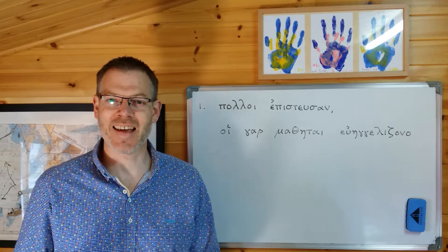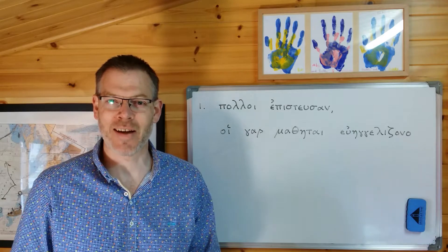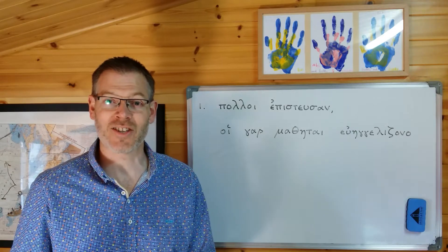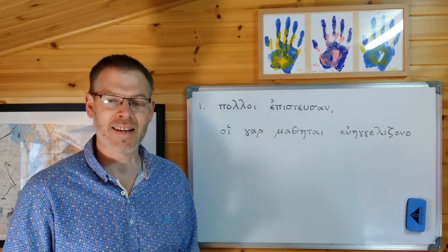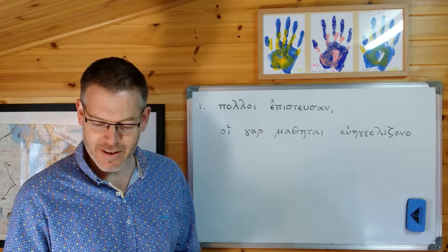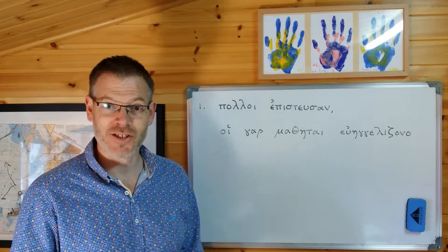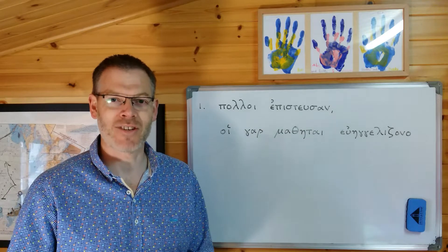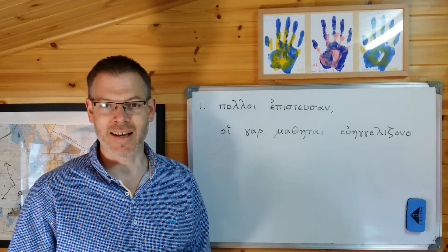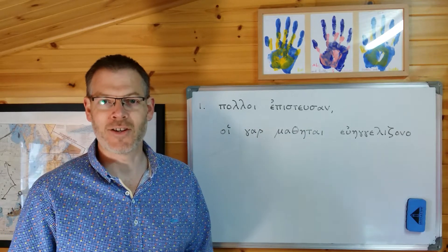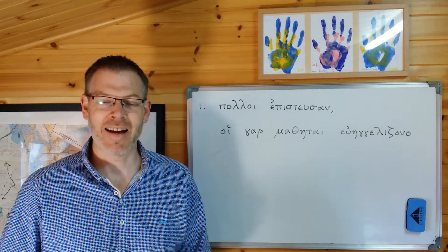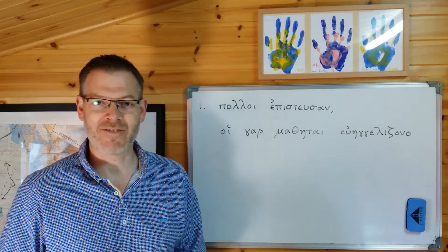Welcome back. We're looking today at Jeremy Duff's Elements of New Testament Greek. We're in section 9.4, right at the end of chapter 9, and this is entitled Conjunctions. Really what it's about is some slightly surprising, though quite common, features of conjunctions, and it's important we get our head around these.